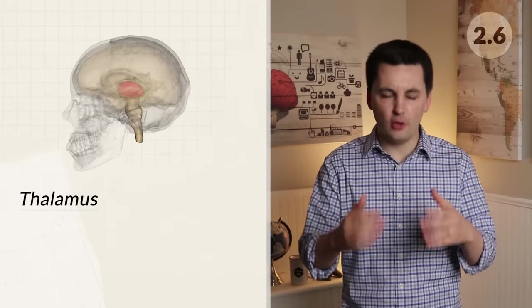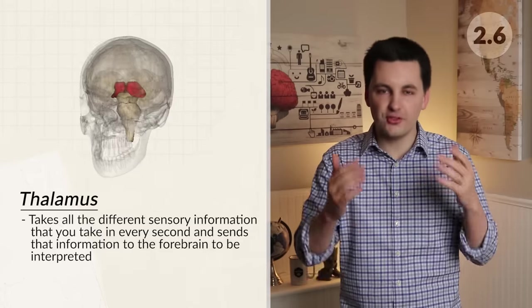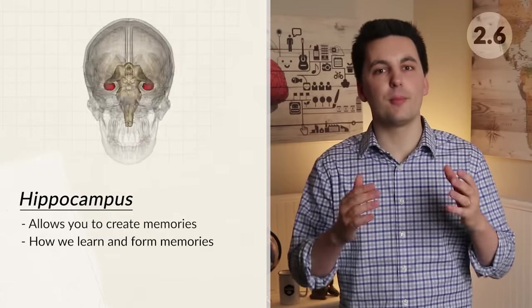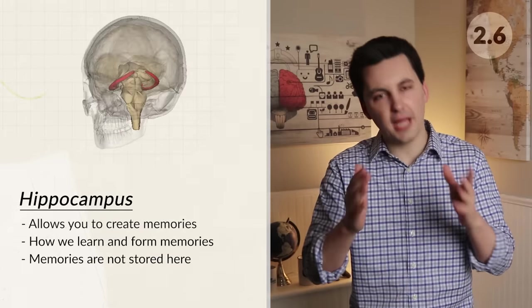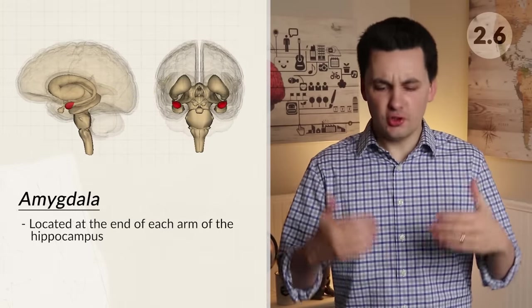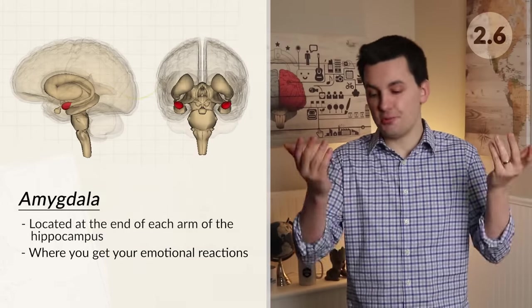The thalamus takes all the different sensory information you take in every second and sends it to the forebrain to be interpreted. The limbic system is a group of structures between the brain stem and the cerebral cortex — the main function here is emotions, learning, memory, and some of our basic drives. Surrounding the thalamus and inside the temporal lobes is the hippocampus, which allows you to create memories — this is how we learn and form memory. Remember, this is where memories are created but they are not stored here. The amygdala is a structure located at the end of each arm of the hippocampus — these two round clusters are where you get your emotional reactions, including fear, anxiety, and aggression.